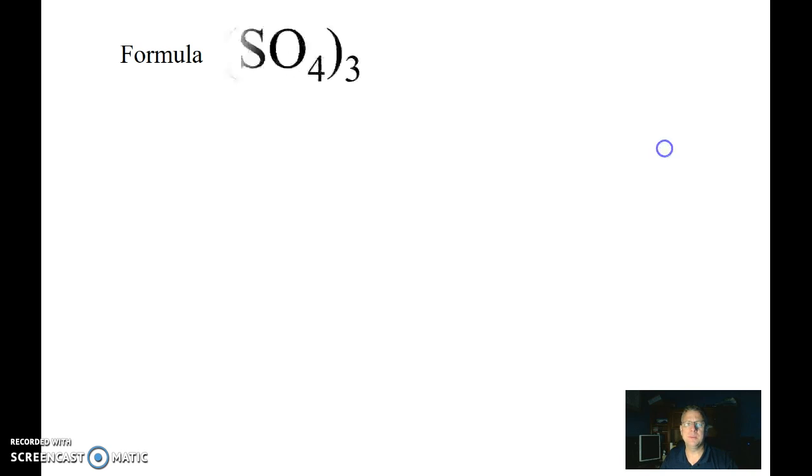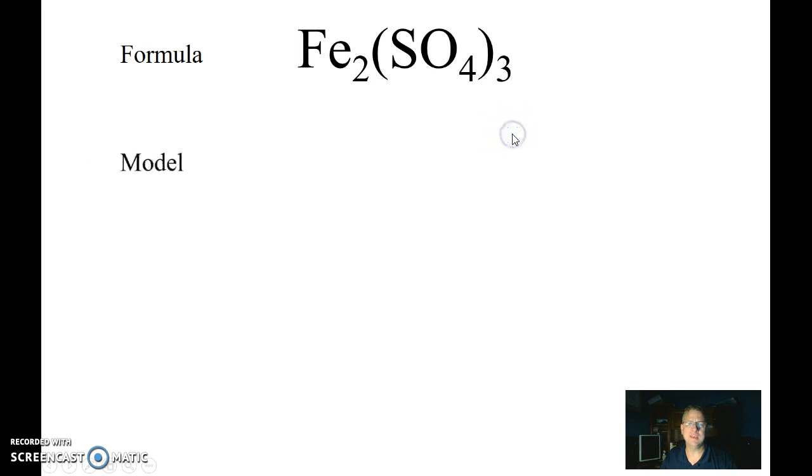Now the next wrinkle we need to be able to look at would be parentheses. Parentheses, just like as in mathematics, are a grouping symbol. They're used to tell us these things stay together. This two still belongs to the Fe, the iron. So in my model, I need two of those. Just like in math, we're going to work inside the parentheses first. So these parentheses, inside that parentheses, I see that I have one S and four Os. Now the little three that's outside there, that three belongs to the parentheses. It's telling me that I have three of whatever is inside the parentheses.